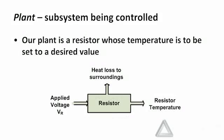The next few slides will be nomenclature-type slides. I talked about a plant, a sensor, and a compensator. I now want to introduce those terms officially and demonstrate what physical part corresponds to each of those subsystems. For us, the plant will be the subsystem which is being controlled. We want to control the temperature of a power resistor, so our plant is simply the resistor whose temperature is to be set to the desired value.